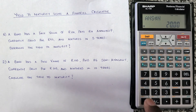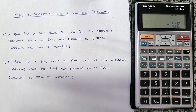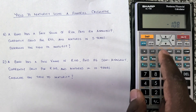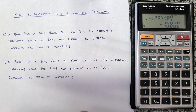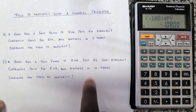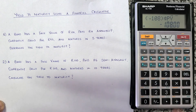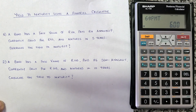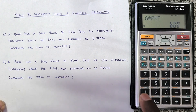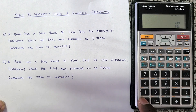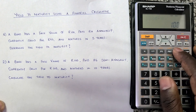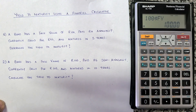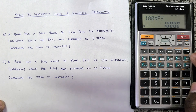Now enter the present value: the bond currently sells for 108 rand, so press 108, press plus/minus to make it negative, and press PV. The payment is 6 rand semi-annually, so press 6 and then PMT — leave it positive. The future value is the face value of 100 rand, so press 100 and press FV — also leave it positive. All details are now entered.